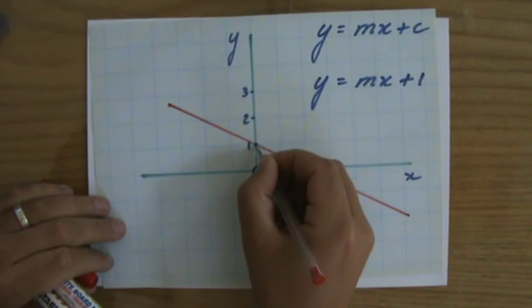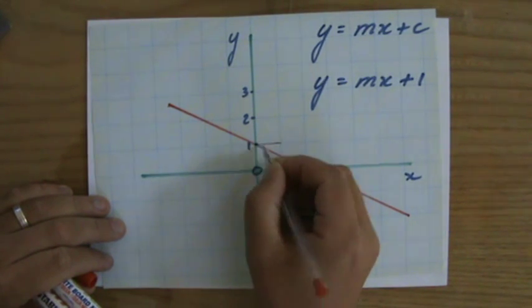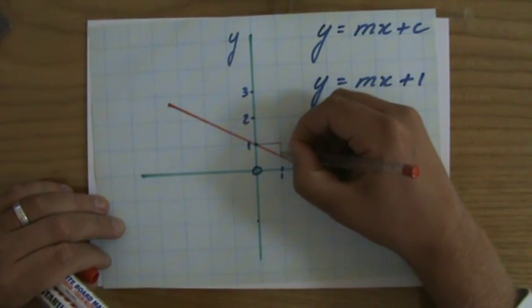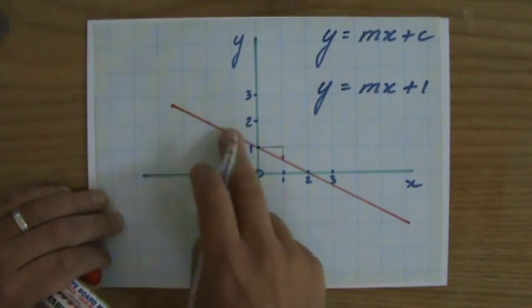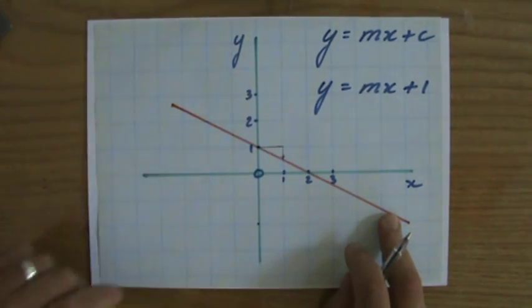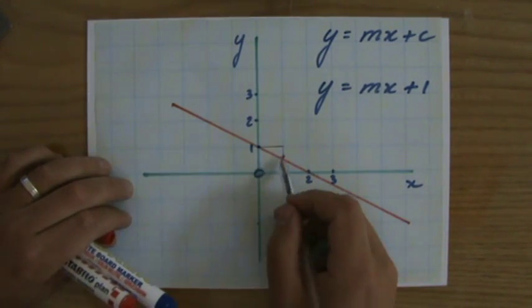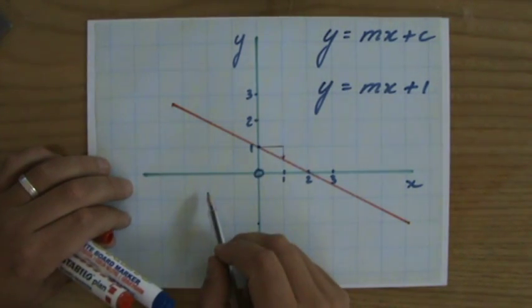Well, I go one step to the right, one unit to the right, but it's difficult to see how many steps, in this case, I go down. Because this line is going down, that's why I have a negative gradient. I already know that as well. But it's difficult to see, and it's not very accurate.